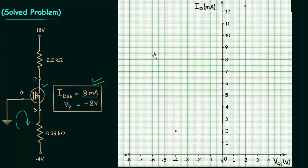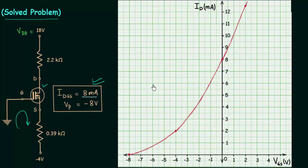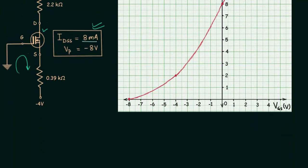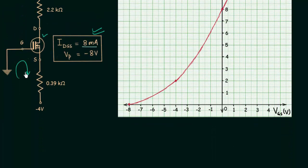All four points have been located in the graph — first, second, third, and fourth point — and now we join them to get the final result. This is how the transfer curve of this device looks. Now we will plot the load line by applying KVL in this loop.